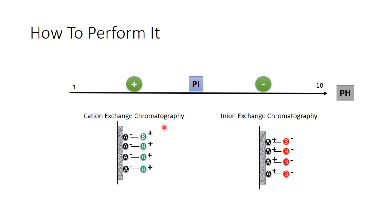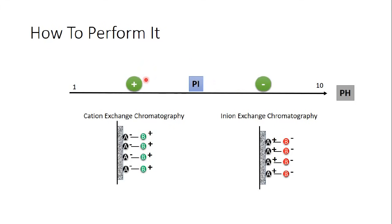Let's say our protein has a pI of 5 and another protein has a pI of 7. If we choose a pH of 6, then this pH is higher than the pI of our protein — making it negatively charged. But this pH of 6 is lower than the pI of the other protein (pI = 7), so the other protein will be positively charged.